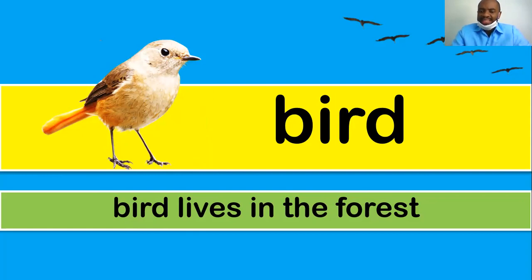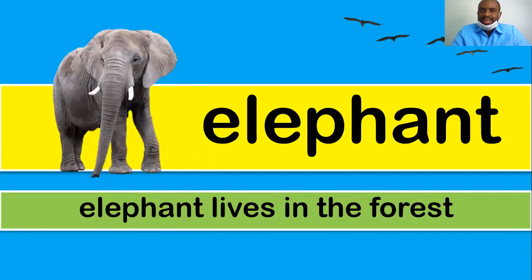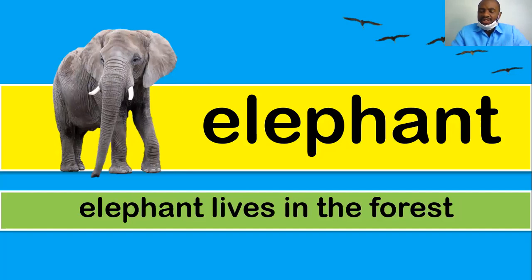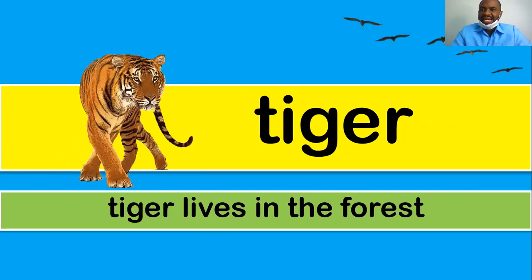Bird — bird lives in the forest, though some people have birds at home as pets. Elephant — an elephant lives in the forest. Horse — horses live in the stable, though some horses live in the forest.